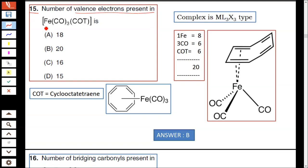Question number 15: The number of valence electrons present in Fe(CO)₃(COT). In this complex, it is a complex of the format ML₃X₃ type, which contains L₃ as a monodentate ligand and COT. COT is cyclo-octa-tetraene, a cyclo-octa-tetraene molecule. This is the structure, cyclo-octa-tetraene which contains four double bonds, an eight-membered ring compound coordinated directly to iron. So Fe gives eight electrons.